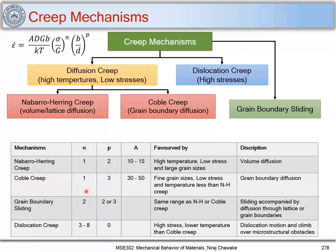For Coble creep, n equals 1, p equals 3, and the Dorn constant is 30 to 50. Coble creep operates at fine grain sizes, low stresses, and temperatures lower than Nabarro-Herring creep. When temperatures are lower than Nabarro-Herring creep and grain sizes are fine, Coble creep operates, and it occurs through grain boundary diffusion.